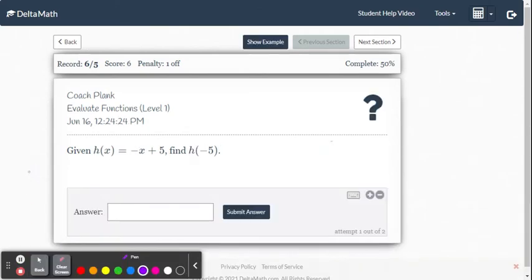Here's our function: h of x equals negative x plus five. Find h of negative five. So we're going to say h of negative five equals negative parentheses, we're going to substitute negative five, and then plus five.